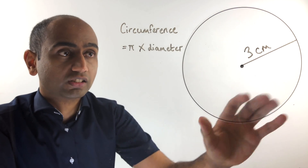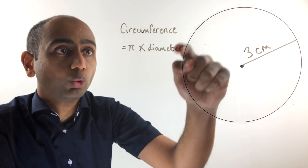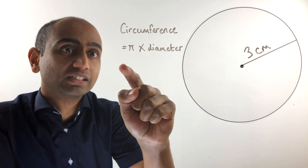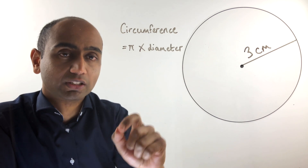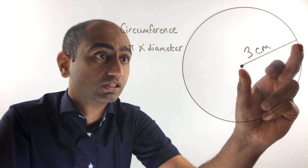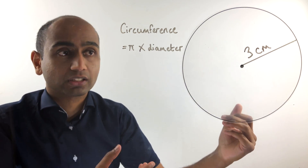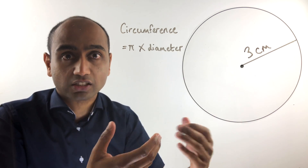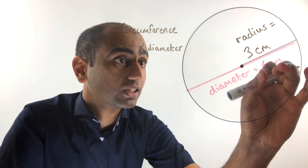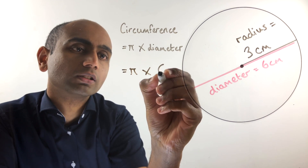Now let's have a look at the first example. We want to find the circumference of this circle — that is the distance all the way around it — and we have a formula for this. The circumference is simply pi times the diameter. In this circle we haven't been given the diameter, only the radius which is three centimeters. But if we know the radius we can easily work out the diameter: it is going to be twice the radius, which is six centimeters.